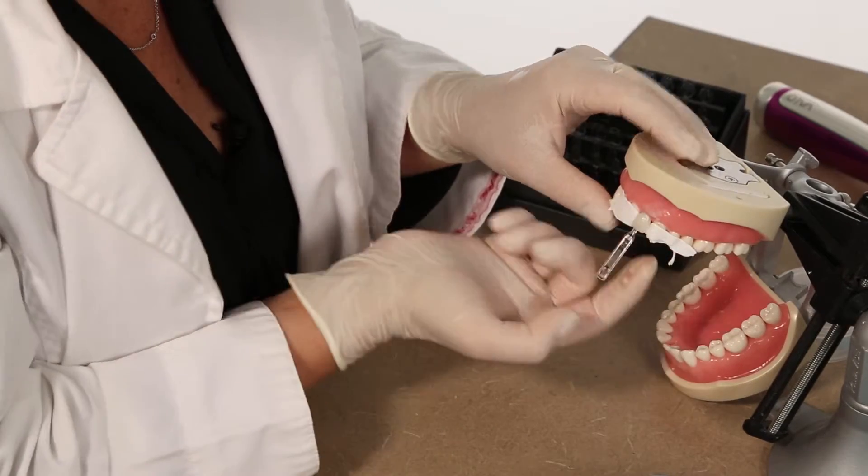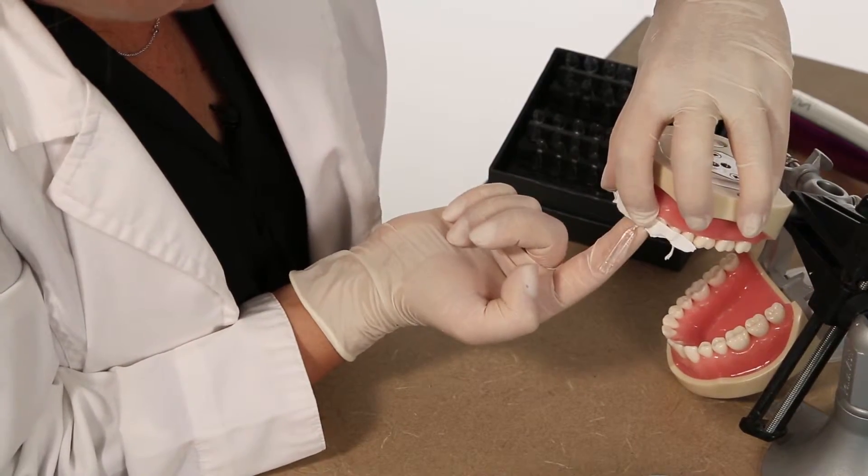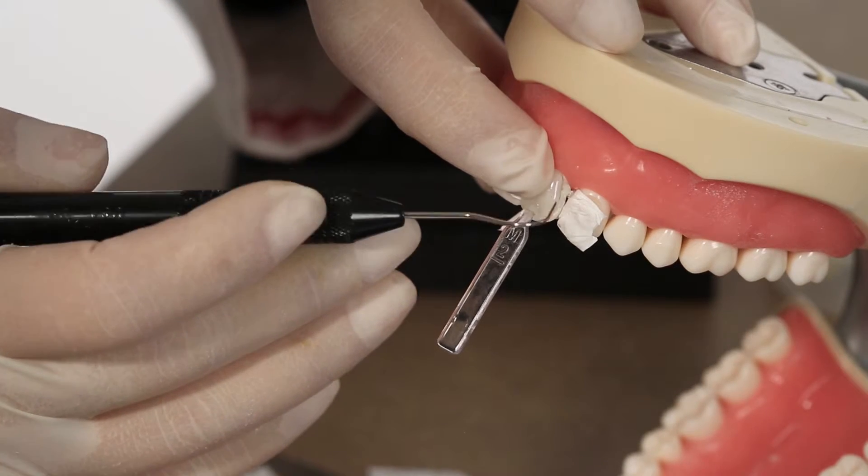Use your fingers to press the composite from the palatal side. Remove excess composite from the periphery with a probe.